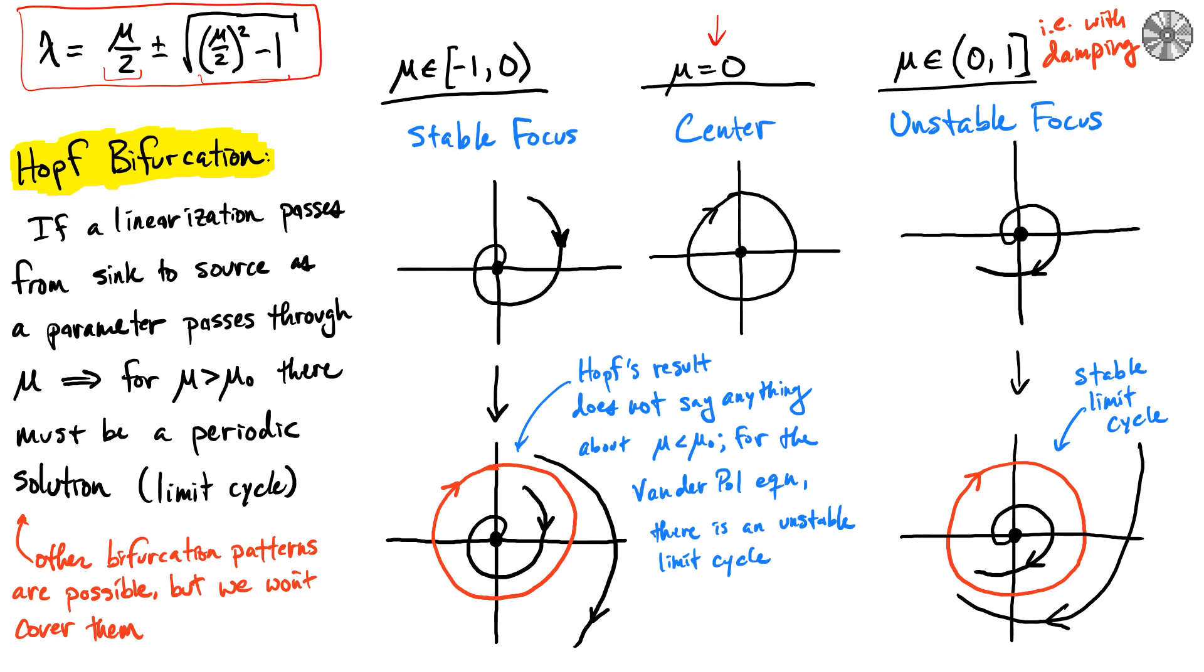If we look at negative μ, similarly, this discriminant is going to be negative, so that's going to make it complex-valued. But in this case, μ is going to be negative, which makes the real part negative, so that's going to be a stable focus. This is just one kind of what's called a bifurcation. A bifurcation refers to essentially how the dynamics, how the shape of this linearization, and especially the stability, changes as you change a parameter of the equation.